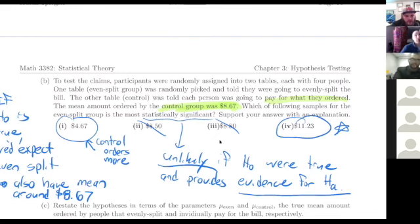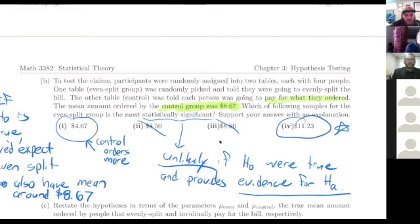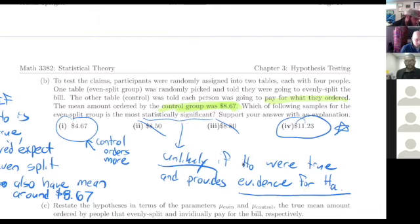If the alternative hypothesis were a claim that the two groups order differently without implying one being bigger than the other, we would just look for the biggest difference and not care which direction. Then the furthest value would actually be the most significant. But because we do care about direction, we pick the bigger one.